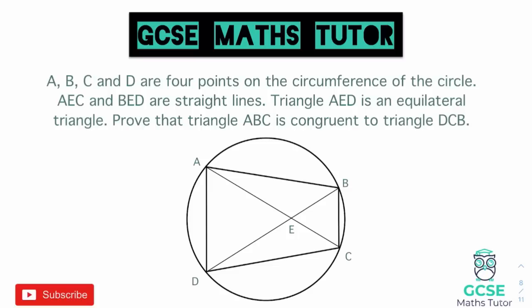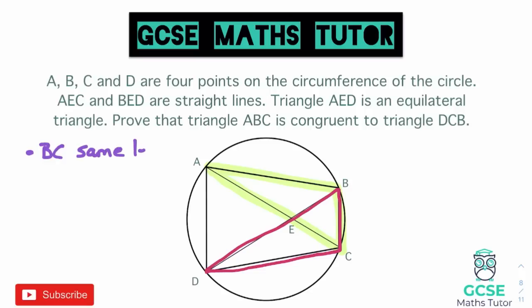It says AEC and BED are straight lines, triangle AED is equilateral, and we want to prove that triangle ABC is congruent to triangle DCB. If we highlight the triangles: ABC is this triangle here, and DCB is the overlapping triangle. Looking at these two triangles, the easiest thing to spot is that line BC is the same in both.